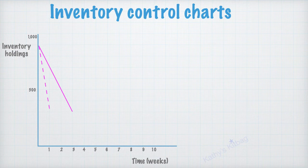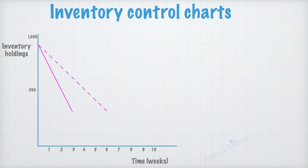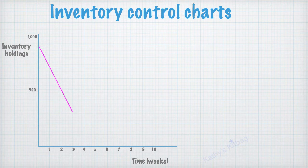Or if the business was using stock more slowly then you'd have a much more gentle sloping line. But for now we will stick with our original line where they're using 600 units over the course of three weeks.